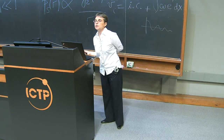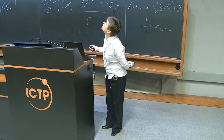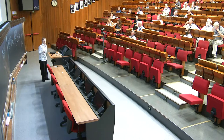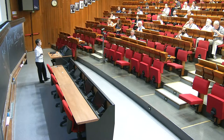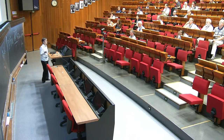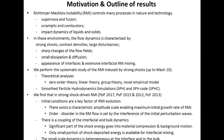Richtmeyer-Meshkov instability controls many processes in nature and technology in both high energy density regimes — such as supernova and fusion — and low energy density regimes, such as scramjets, combustors, and impact dynamics of liquids and soils. In these environments, the flow dynamics is characterized by strong shocks, large density contrasts, and large disturbances, meaning flow fields change sharply and rapidly. There is very small contribution of dissipation and diffusion, resulting in extensive interfacial Richtmeyer-Meshkov mixing.